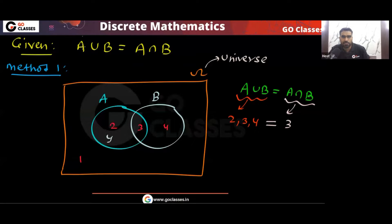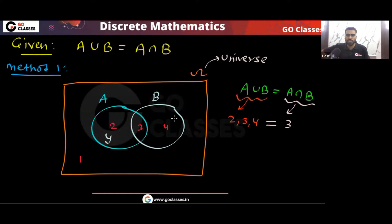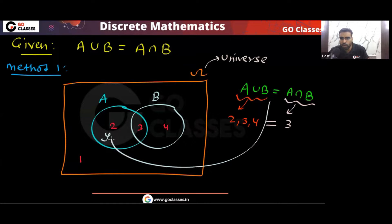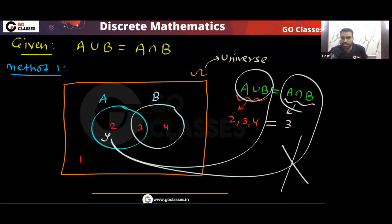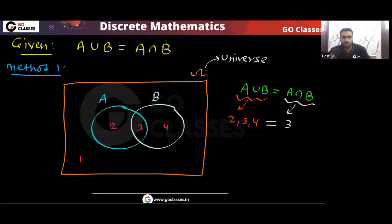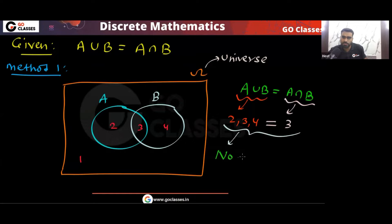Can you have some element in area two? If you have some element there, then that element will belong to A union B but will not belong to A intersection B. So A union B cannot equal A intersection B. Therefore, if A union B equals A intersection B, there can be no element in area number two.